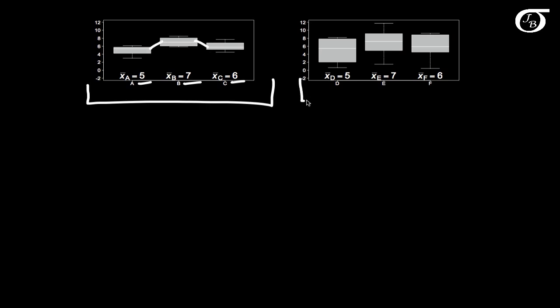Over here on the right we have a very similar type of setting, and the sample means over here 5, 7, and 6 are exactly the same as the plot on the left. So there is the same variability between the sample means. And the sample sizes are the same for all groups here.